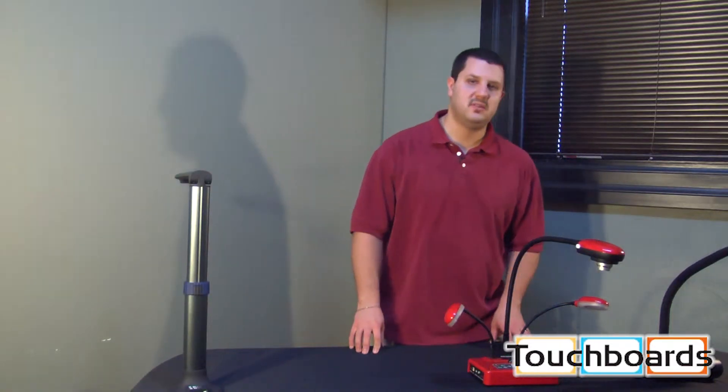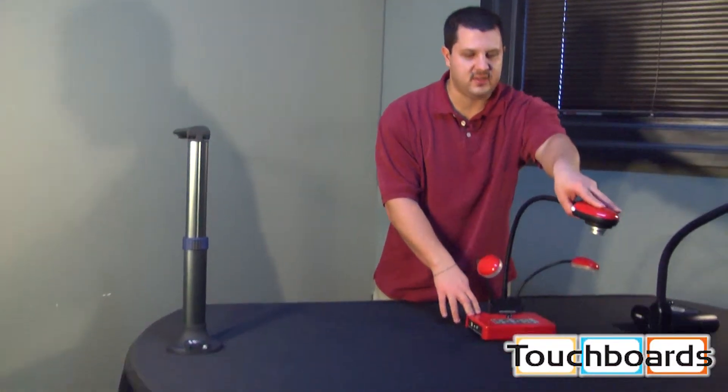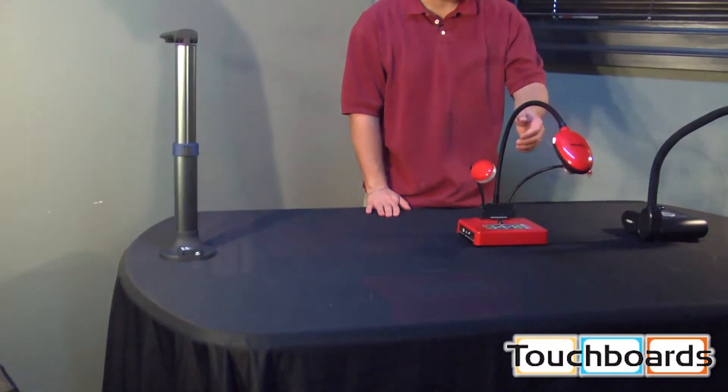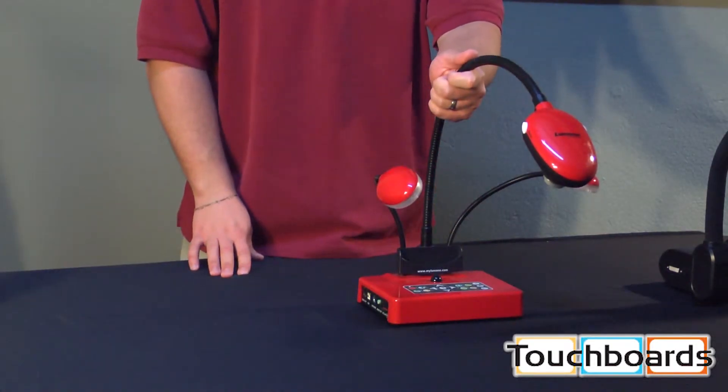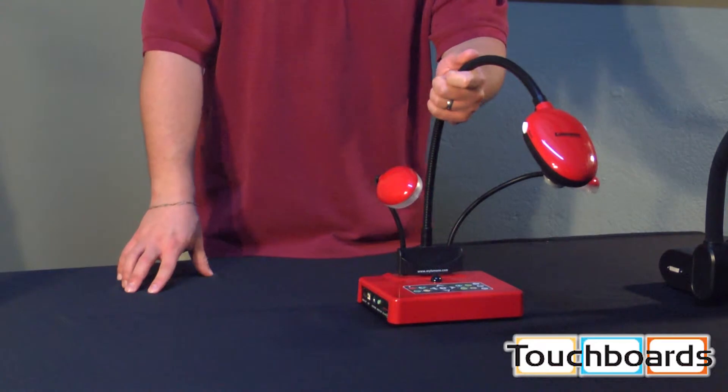Next, we're going to go up to a typical VGA port setup. I'm going to use this Lumens DC 265 as an example of that. You've got a couple ways you can set this up. First, we're going to go VGA directly into a projector.